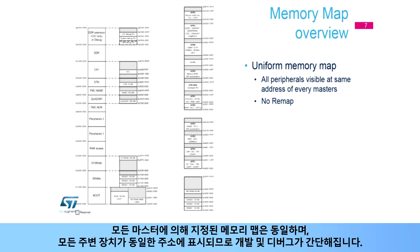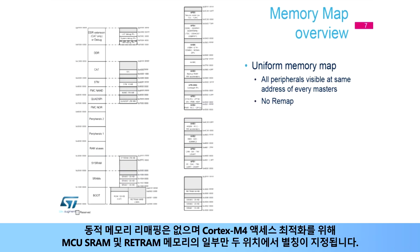All peripherals are visible at the same address, simplifying development and debug. There is no dynamic memory remapping. Only part of the MCU SRAM and RETRAM memories are aliased on two locations to allow Cortex-M4 access optimizations.